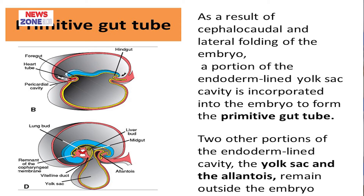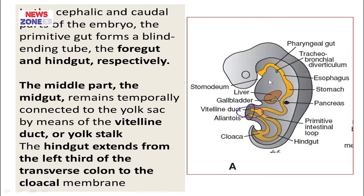This is the primitive gut tube. The cephalocaudal region of the primitive gut tube is a blind loop. The middle part of the gut communicates with the yolk sac through a duct known as the vitelline duct. The hindgut extends up to the cloacal membrane.